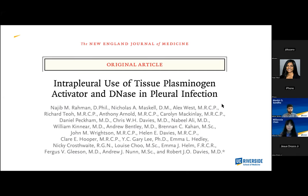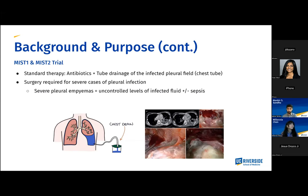Now we're going to talk about our paper of the month, which is titled 'Intrapleural Use of Tissue Plasminogen Activator and DNase in Pleural Infection' by Rahman et al. This was published in the New England Journal of Medicine in 2011. Now with the background and purpose of the MIST-1 and MIST-2 trial.